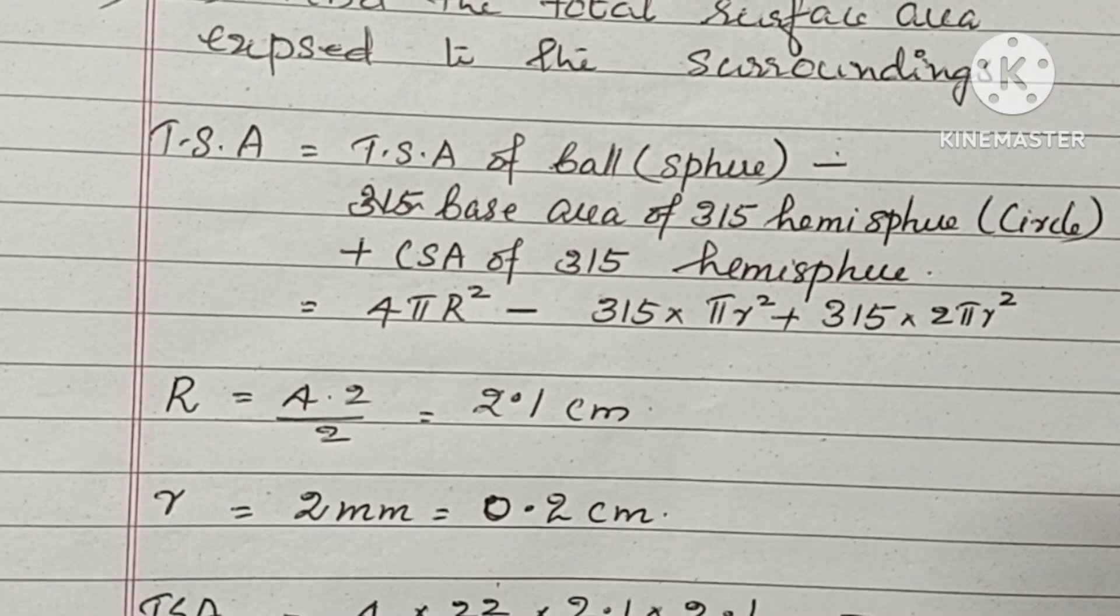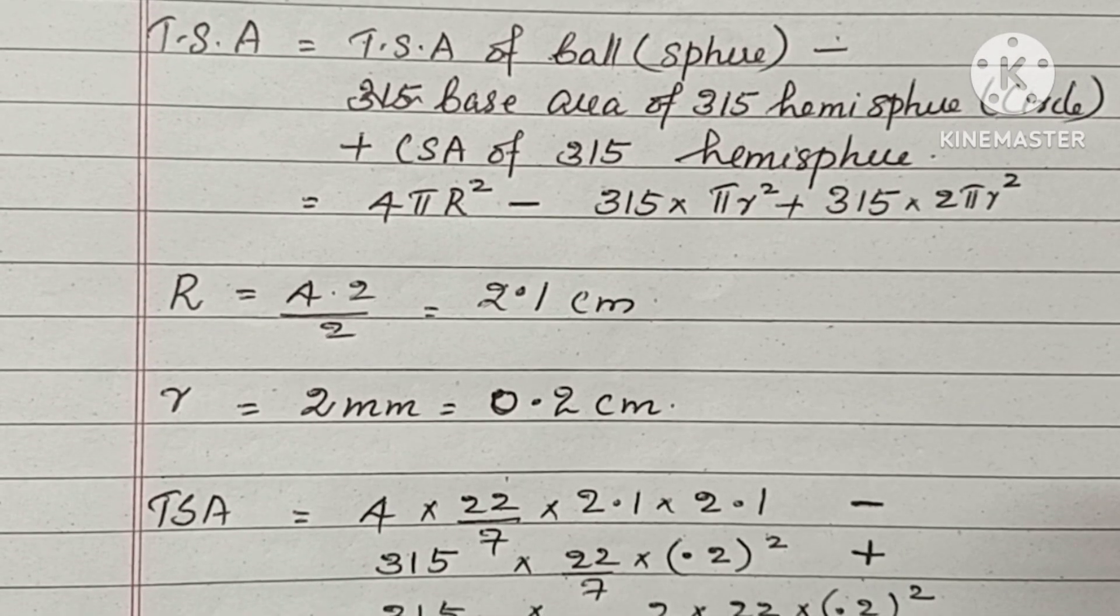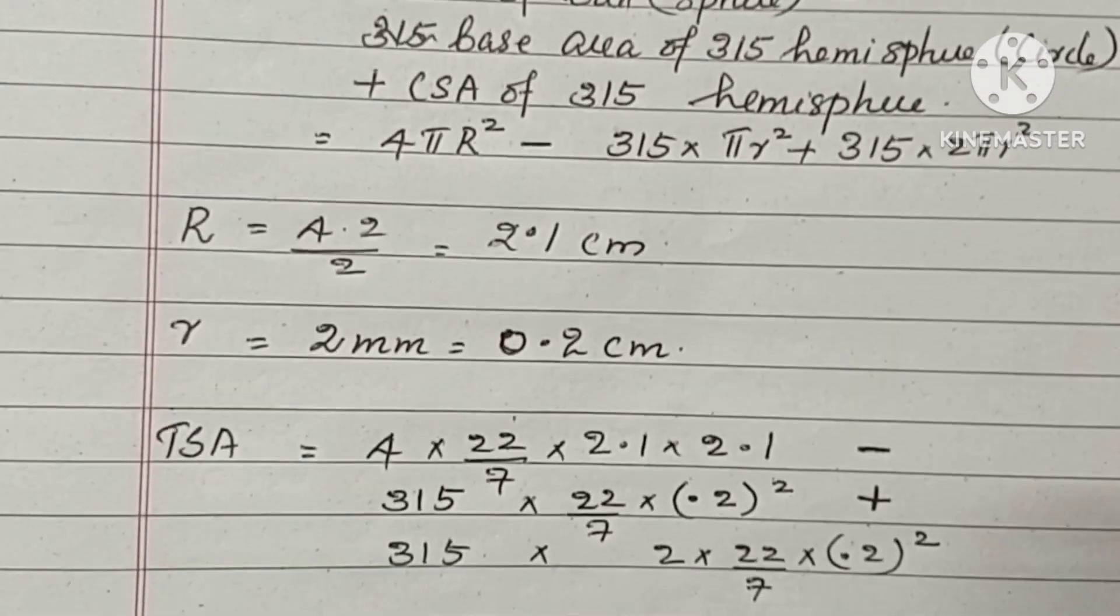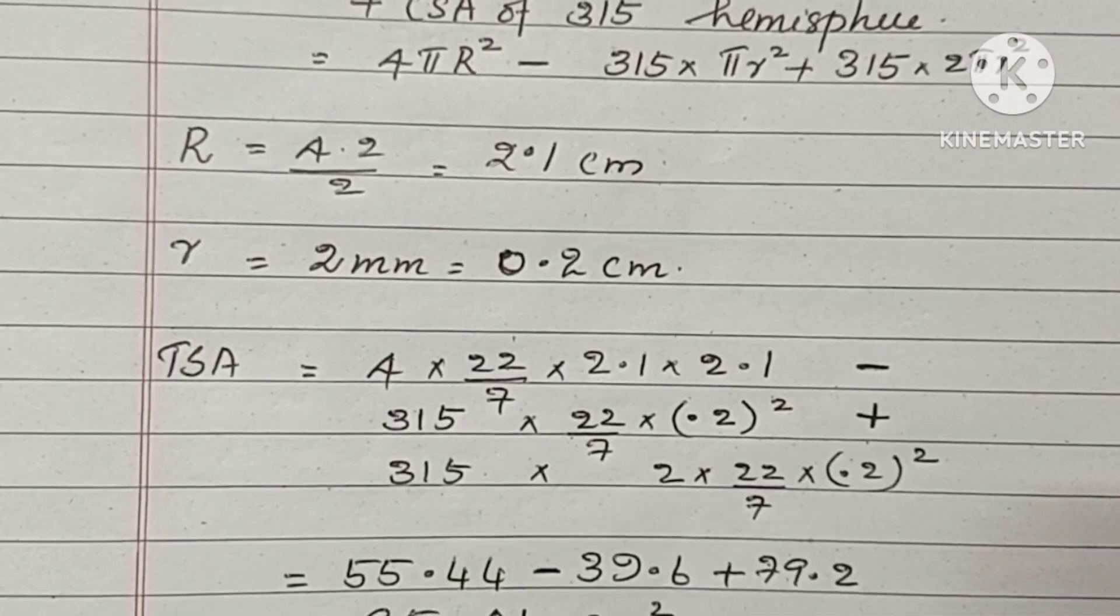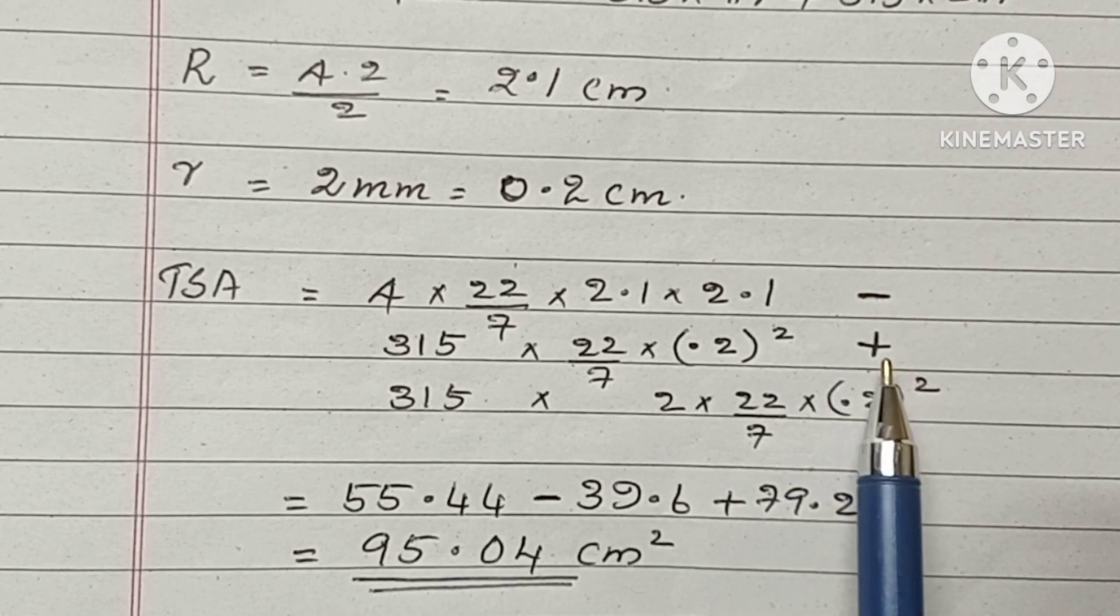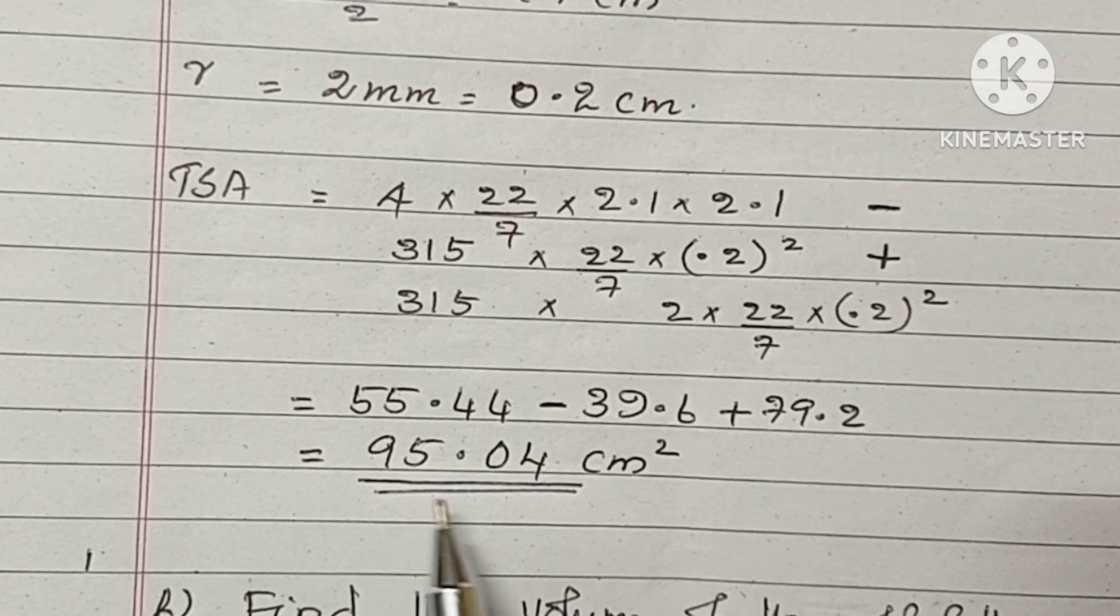Area of the sphere. Radius of the sphere is 2.1 cm. And radius of these small dimples are 0.2. Then, the total surface area, substituting each values. Here, we are subtracting. After that, we are adding. The final value is 95.04 cm².